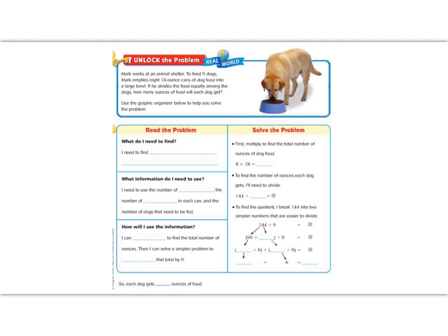As always, when we have a word problem, let's start by finding the question. Our question is usually at the very end. How many ounces of food will each dog get? And let's also locate our numbers in this problem. We have nine dogs. We have eight 18-ounce cans.